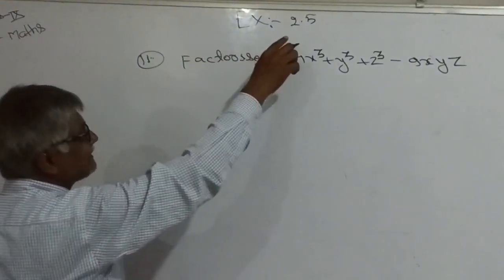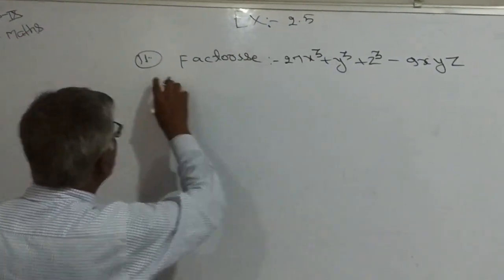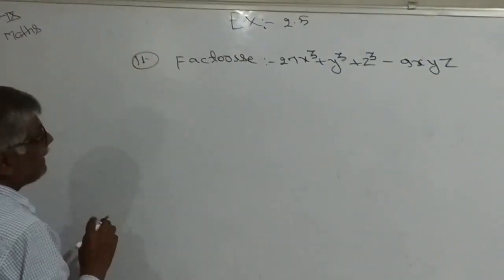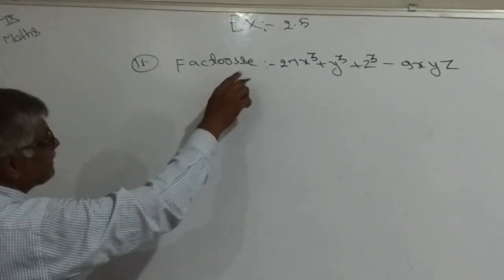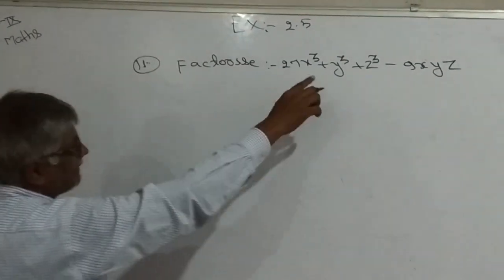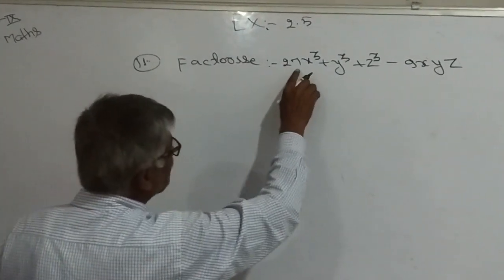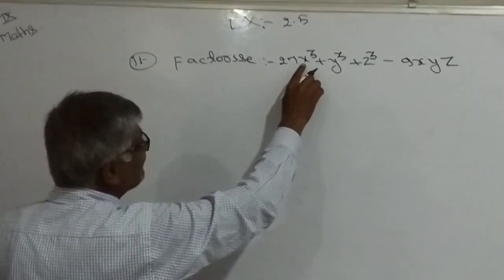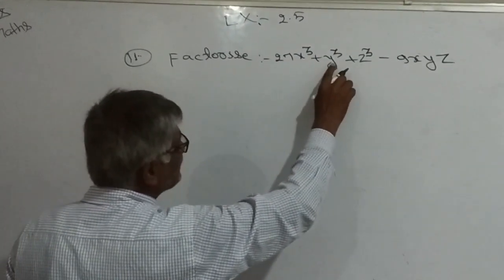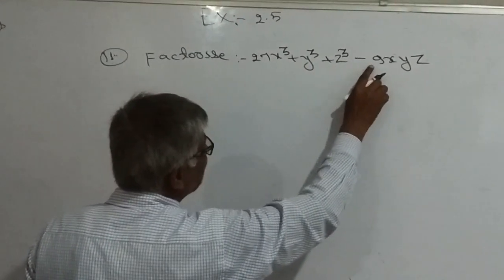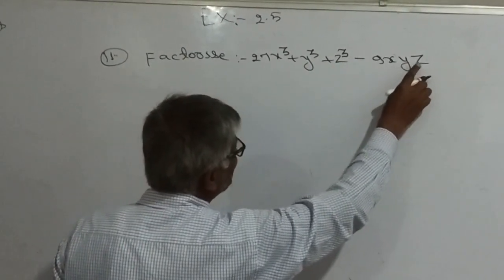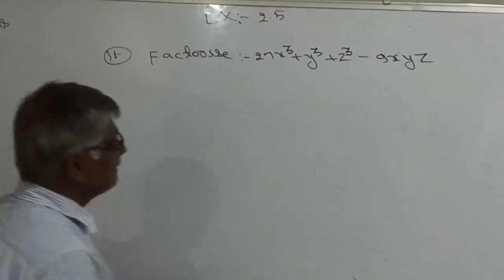Exercise 2.5, Question number 11: Factorize 27x³ + y³ + z³ − 9xyz.